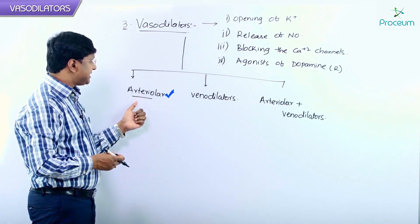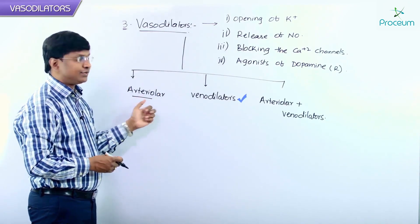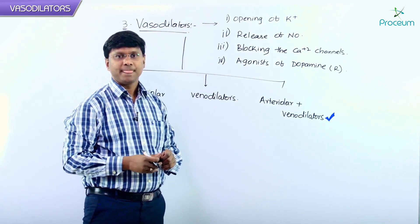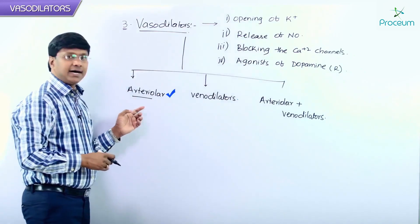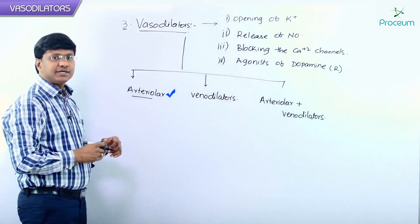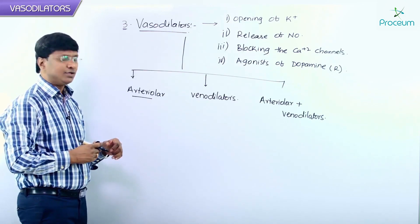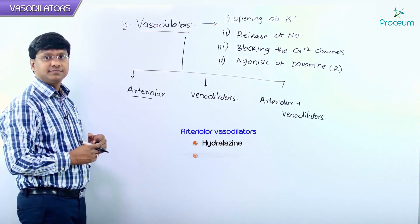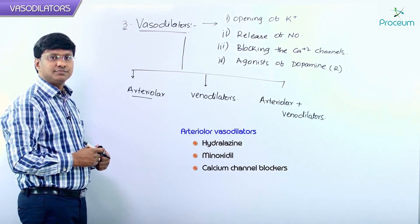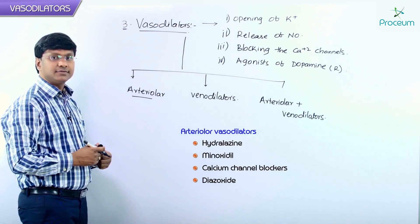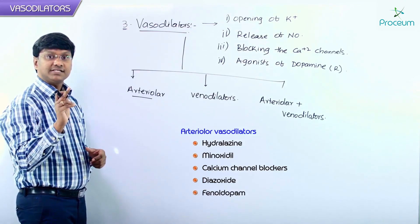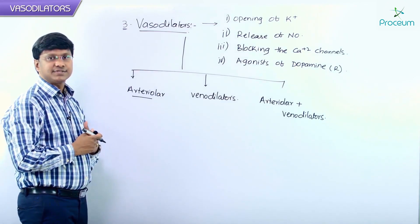Vasodilatation can be arteriolar dilatation, venodilation, or arteriolar plus venodilation. Drugs which cause pure arteriolar dilatation include hydralazine, minoxidil, calcium channel blockers, diazoxide, and phenoldopam. These are arteriolar vasodilators.